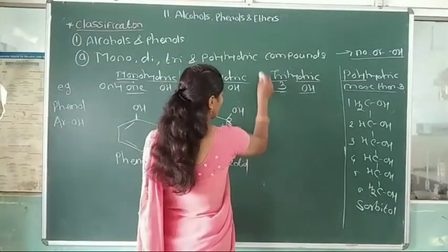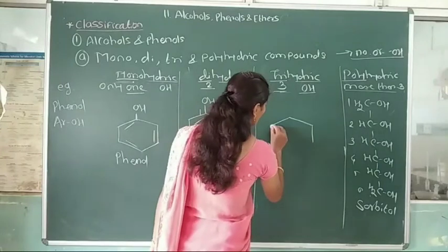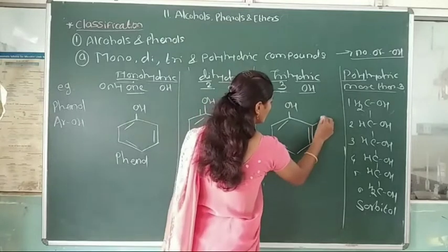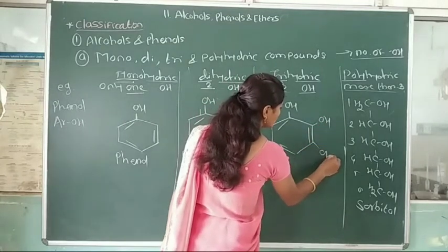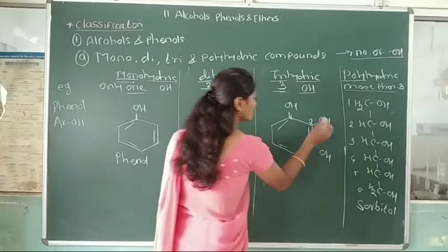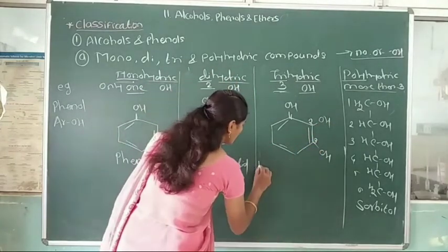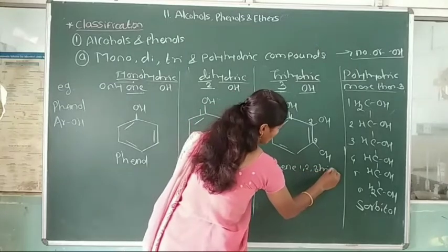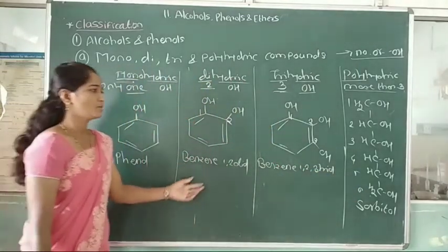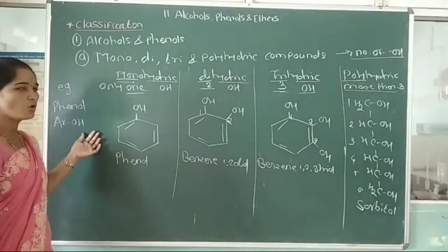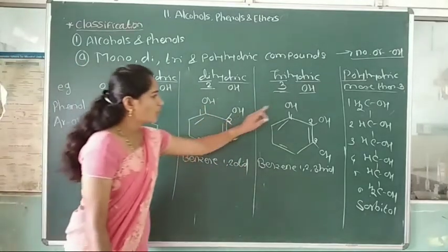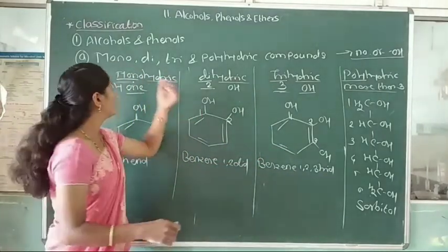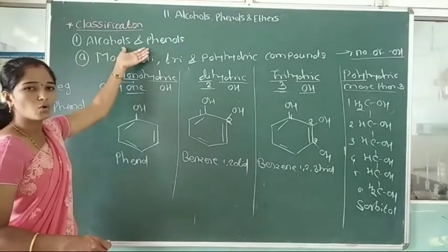In trihydric phenol, three hydroxy groups are directly attached to the benzene ring at positions 1, 2, and 3. The name of this compound is benzene-1,2,3-triol. These are examples of phenol classification on the basis of 1, 2, and 3 hydroxy groups directly attached to the benzene ring.